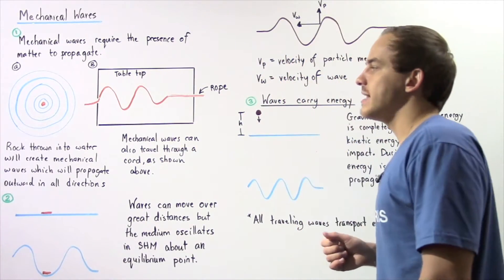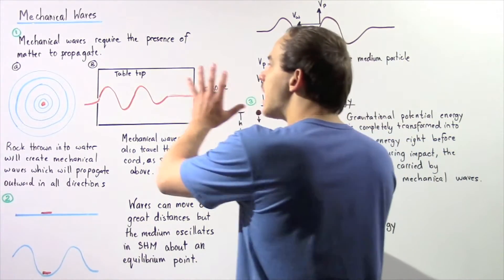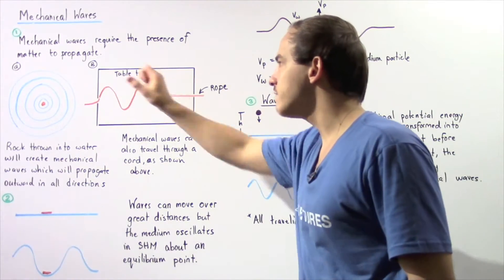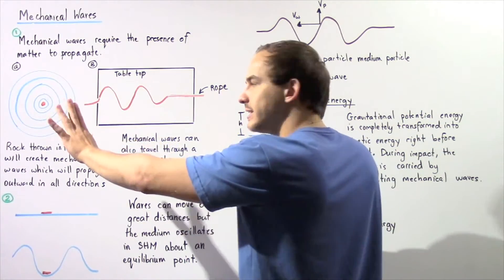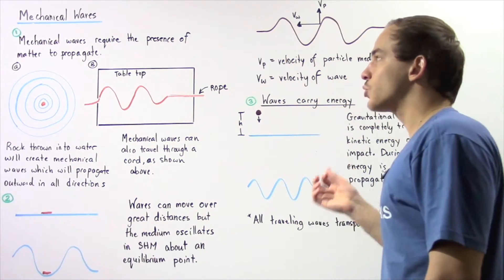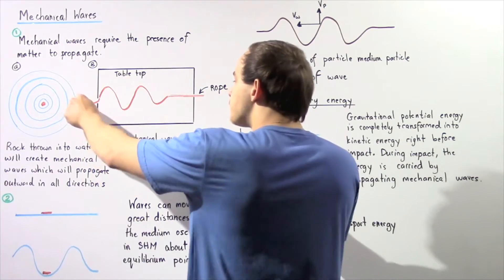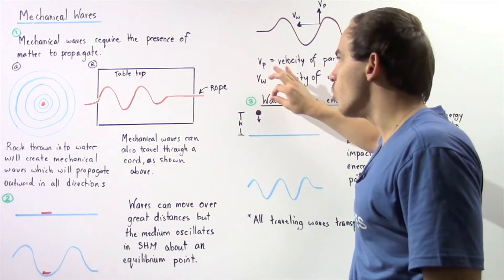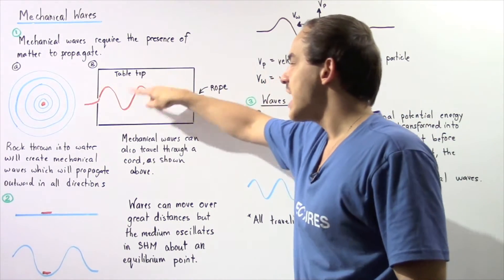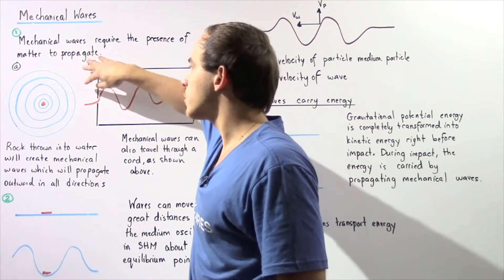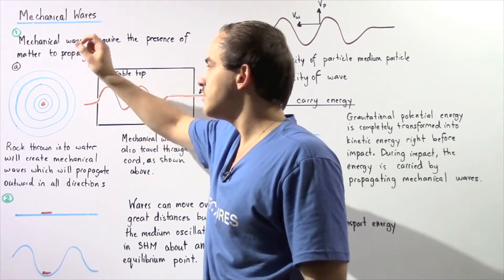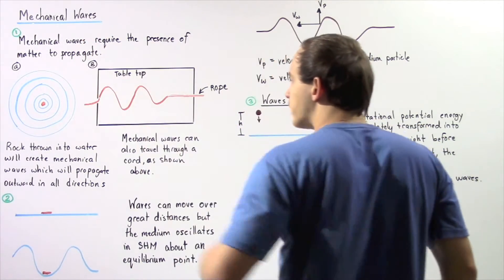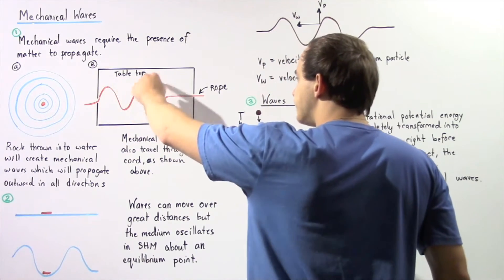In example B, we're looking at the top-to-bottom view of a table top. Let's suppose we place a cord or a rope on top of our table. We take the cord at one end and oscillate it, and that movement of our hand creates an oscillation which creates a mechanical wave that propagates in the rope. So the medium in example B is the rope. What creates the mechanical wave is the motion of our hand, which forces the rope to propagate in a wave-like manner.